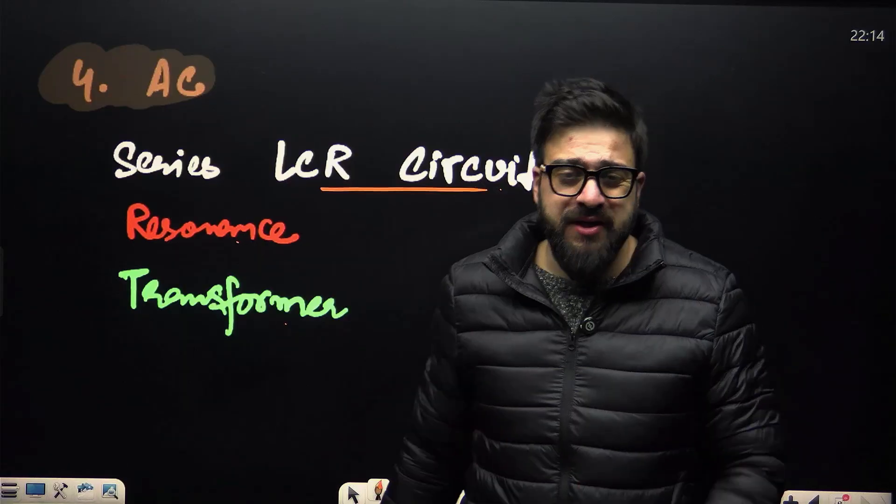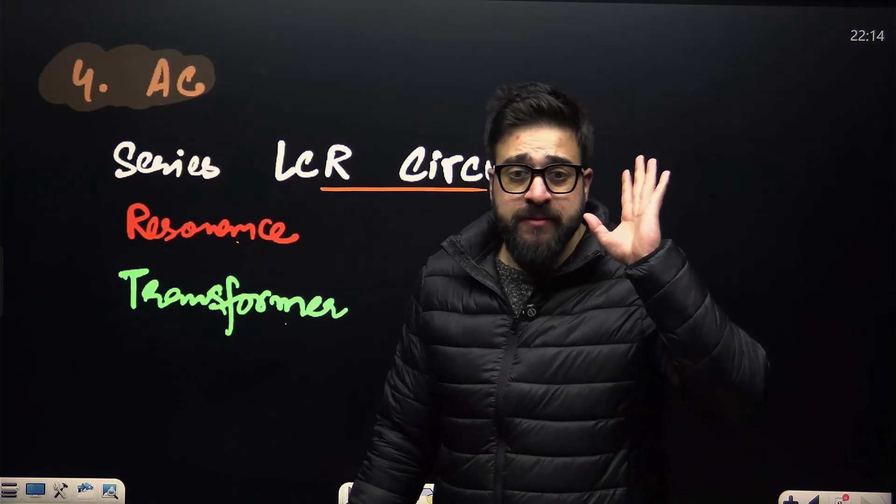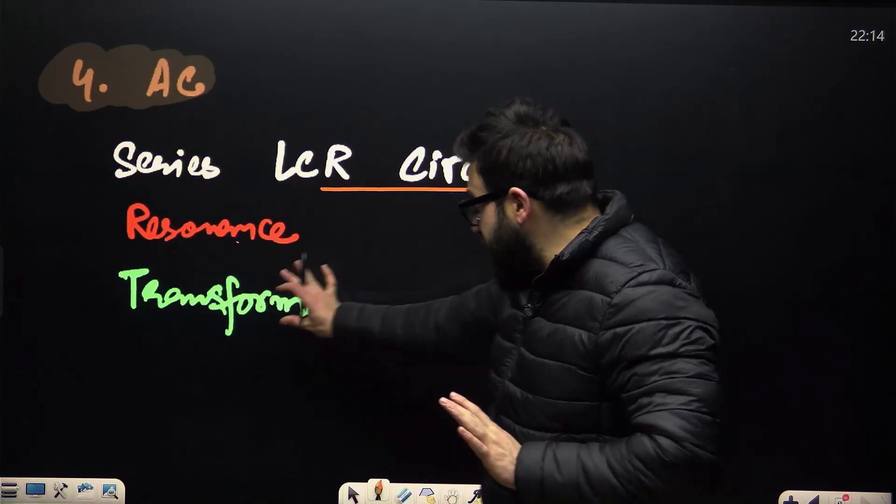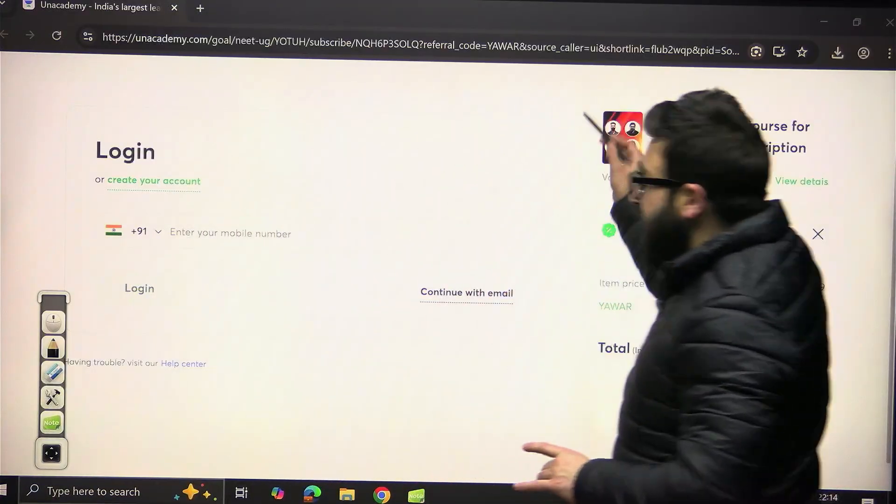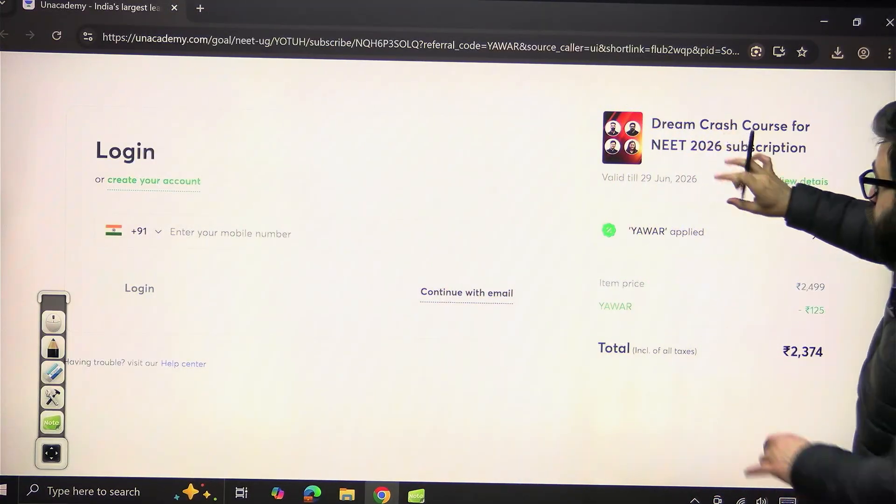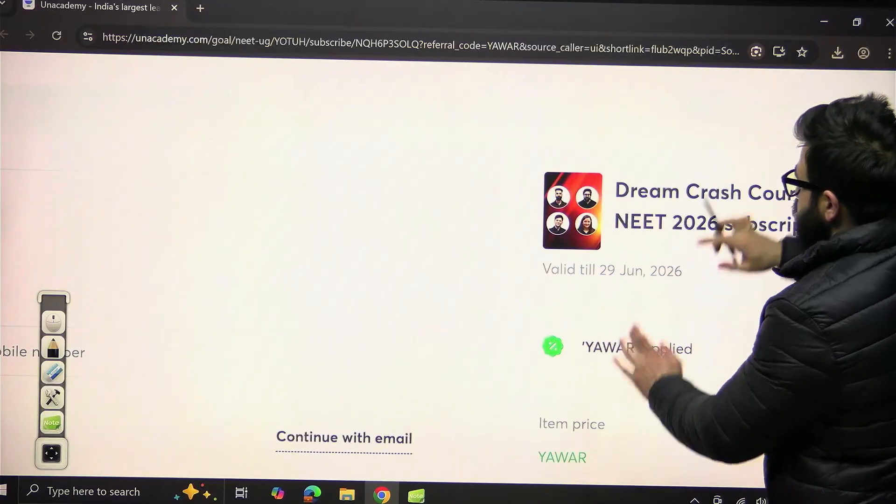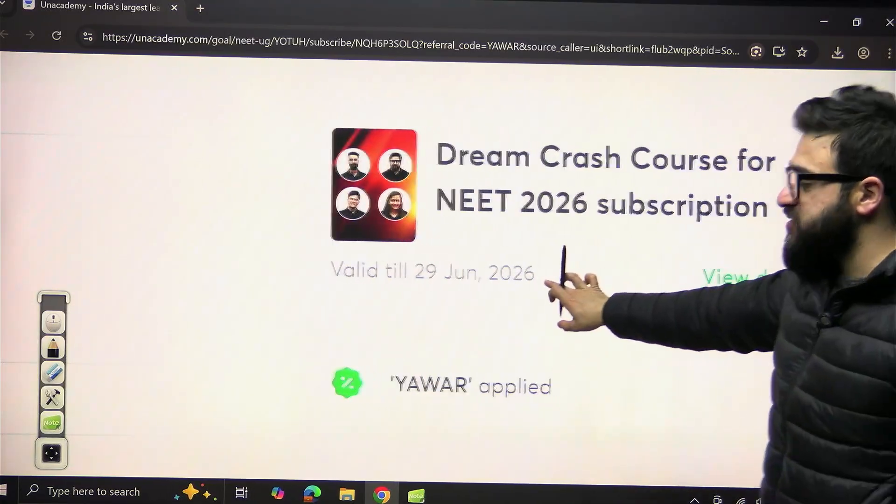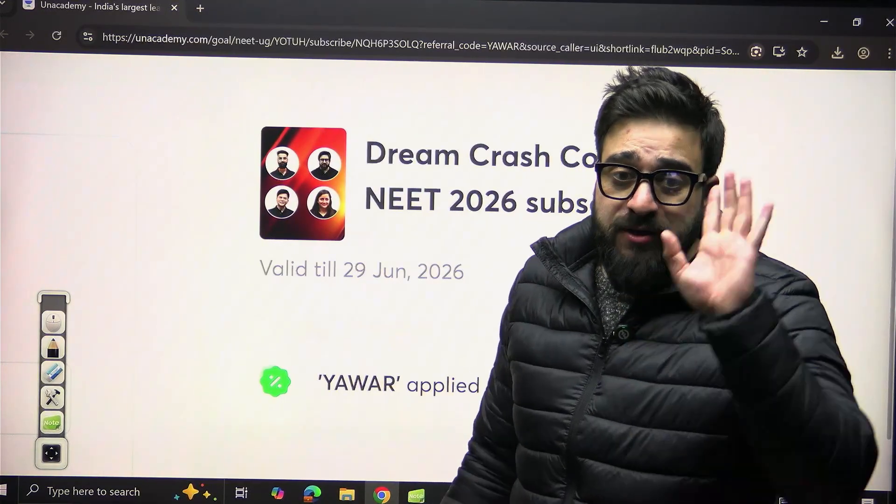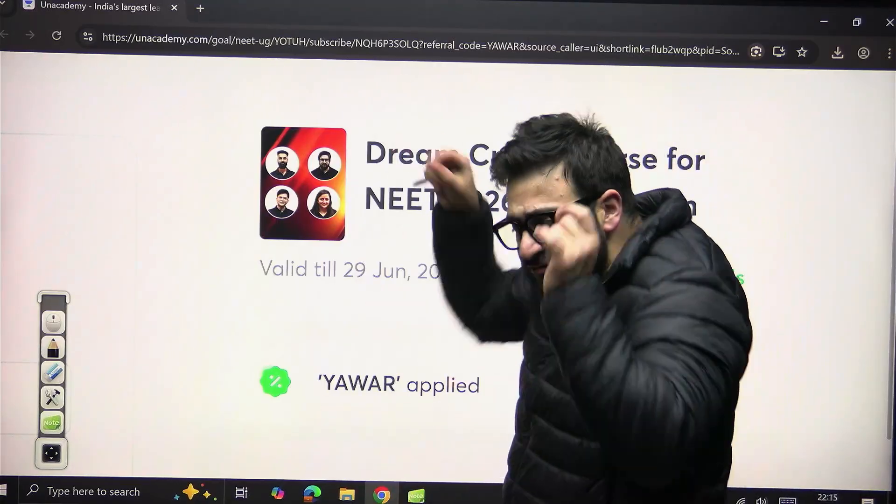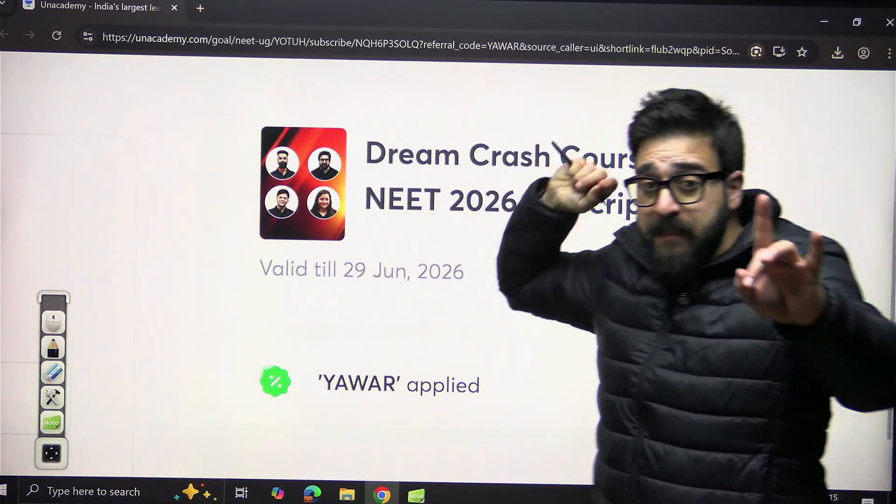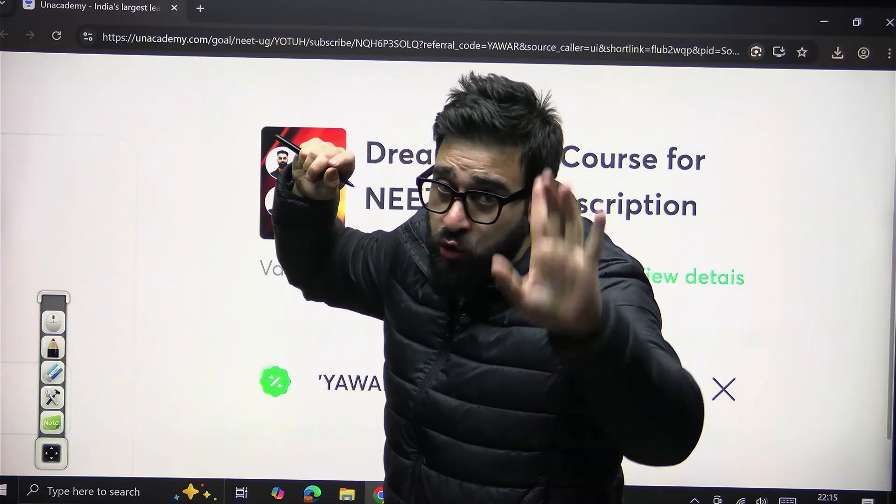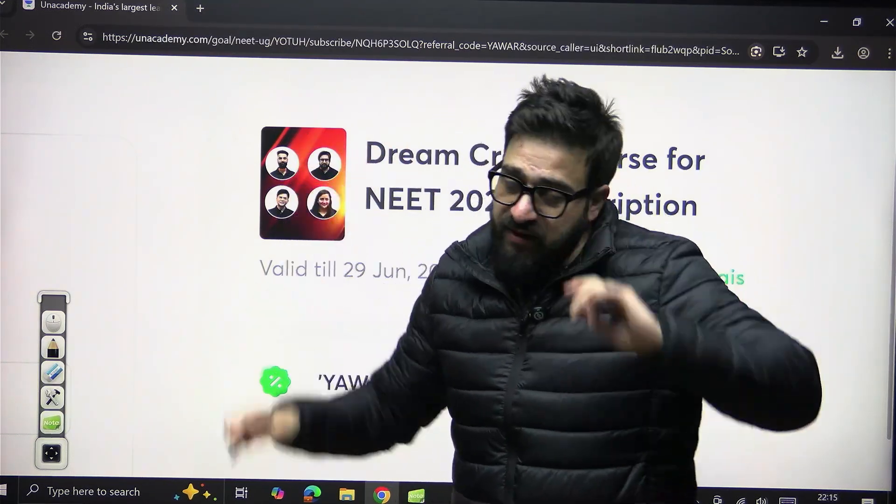So make sure, my dear friends, you smash the like button. And if you have not joined this Dream Crash Course batch, the link is in the description below. You can join this Dream Crash Course batch as soon as possible because I will be starting from these chapters only. Okay, I'll be completing everything on my own, and I'll be starting from these chapters only. Make sure all of you join this. Take care and bye bye, thank you so much.